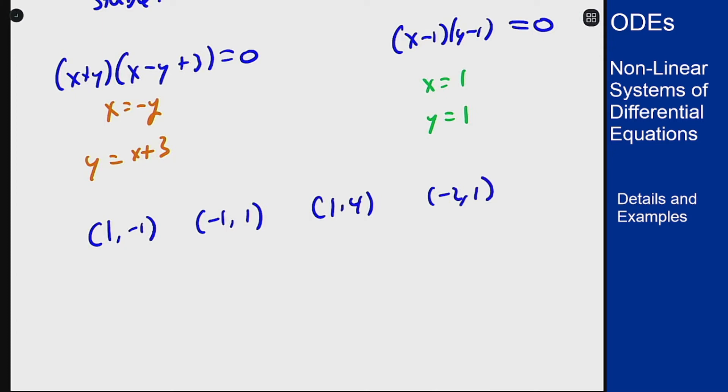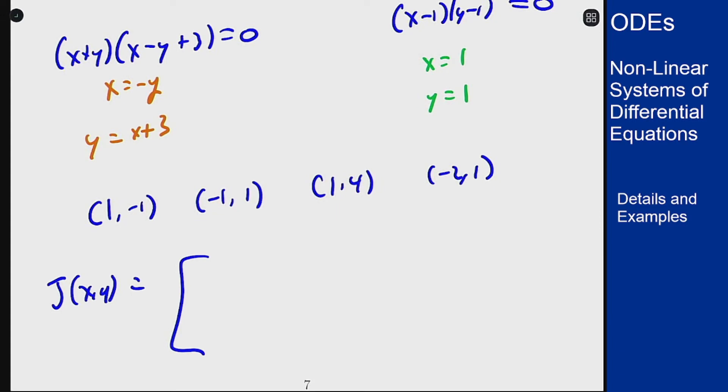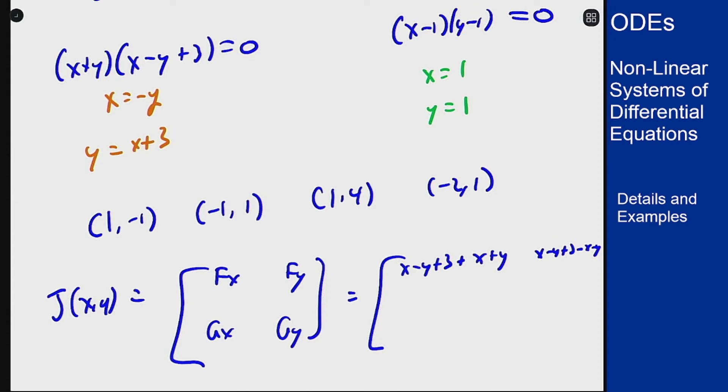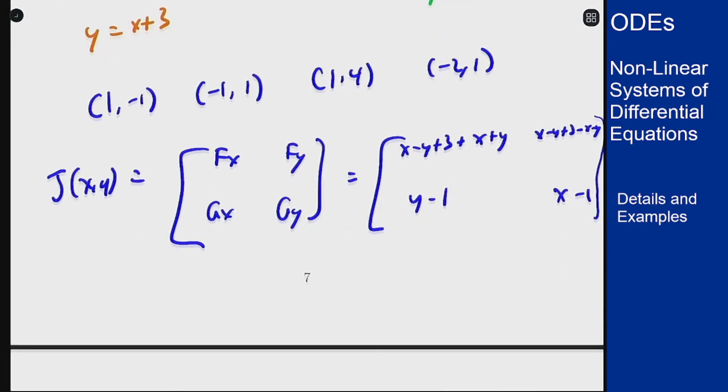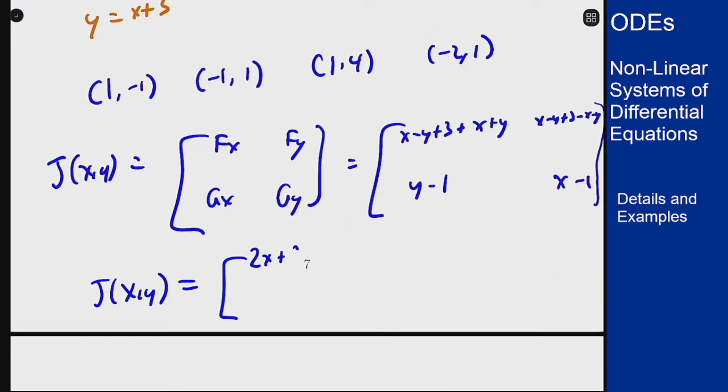Now let's find the Jacobian matrix and see where that gets us. So fx, fy, gx, gy. fx is x minus y plus 3 plus x plus y. The derivative with respect to y gets me x minus y plus 3 minus x minus y, because of the minus sign that comes out of here. And then gx is y minus 1, gy is x minus 1. So simplifying this out, we get 2x plus 3, 3 minus 2y, y minus 1, x minus 1.